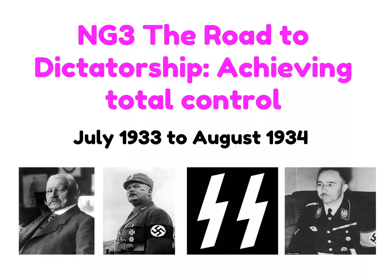In this video we're going to focus on the road to dictatorship and explore how Hitler was able to achieve total control from July 1933 to August 1934. This is really important because it outlines how President Hindenburg's death led to Hitler becoming dictator of Germany, but first we need to explore how Hitler achieved total control and ultimately became the Führer of Germany.